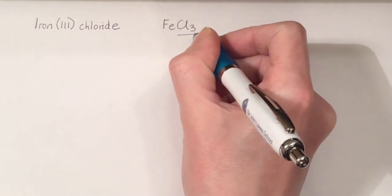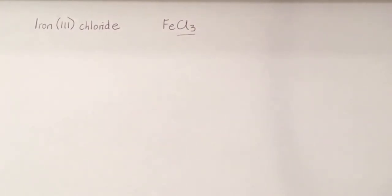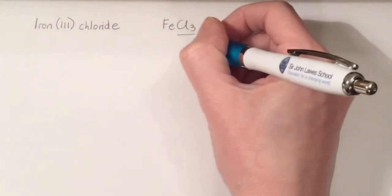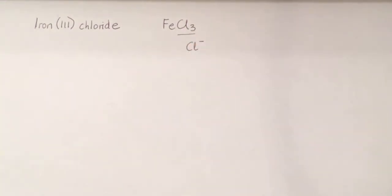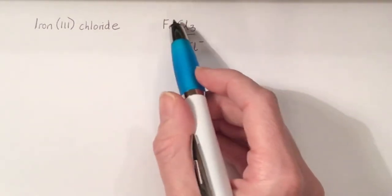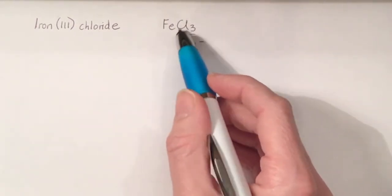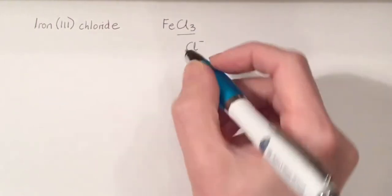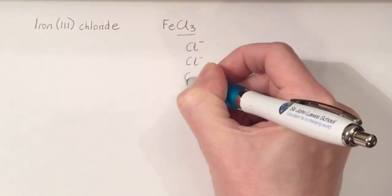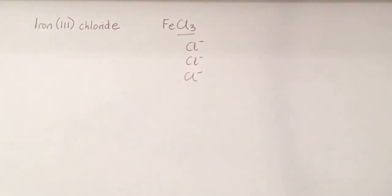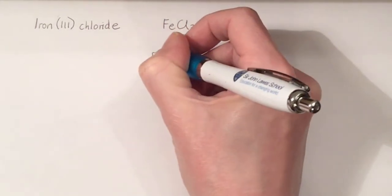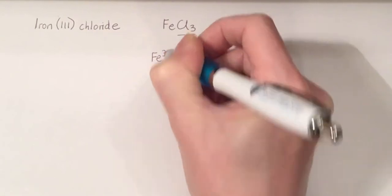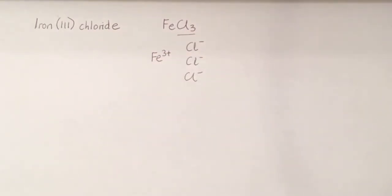I know the chloride ion. Chlorine is in group seven. It's got seven electrons in its outer shell. It's more stable if it has eight, so it gains one electron to form the chloride ion, Cl minus. We've got three Cl minuses in this compound, and overall it's going to be neutral. So we've got three of these giving us a three minus charge overall, which means we must have Fe3+. So those are our two ions.